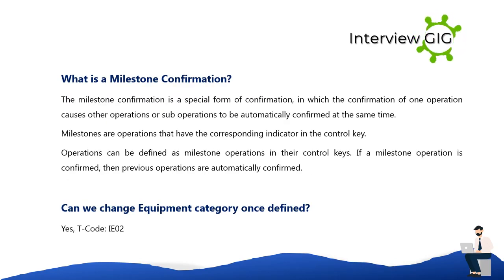A milestone confirmation is a special form of confirmation in which confirming one operation causes other operations or sub-operations to be automatically confirmed at the same time. Milestones are operations that have the corresponding indicator in their control key. If a milestone operation is confirmed, then all previous operations are automatically confirmed. Equipment category can be changed once defined using T-code IE02.